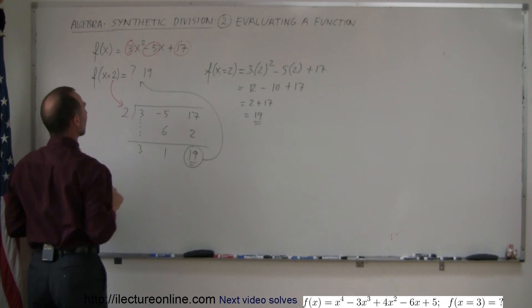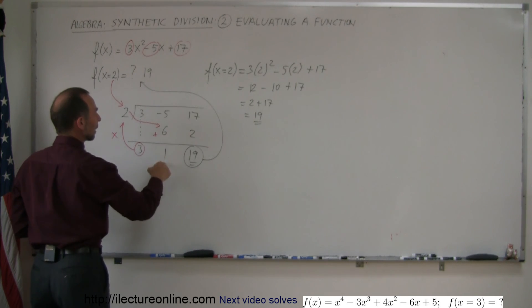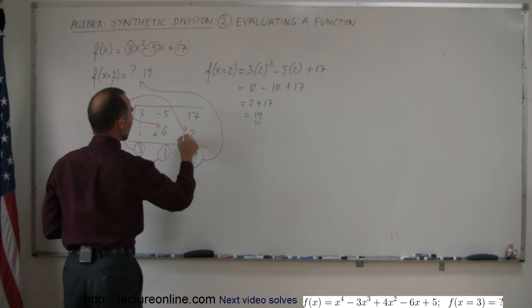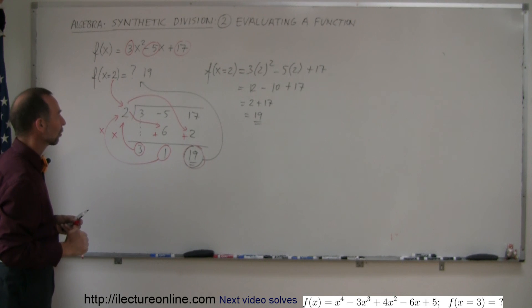Then take the number 2, put it there. You drop down the 3, multiply 3 times 2, and place it over here. Then we add them together, you get 1. Take this number, multiply it times 2, and that number goes over here. We add it together, and there's the result. That is the function evaluated when x equals 2.